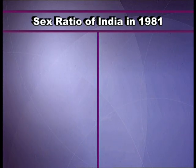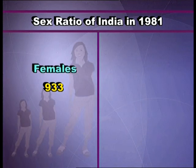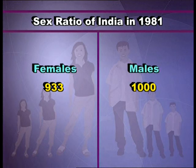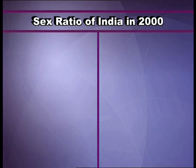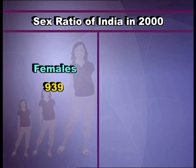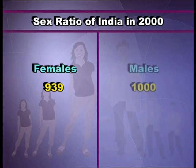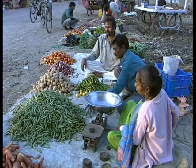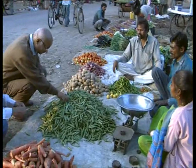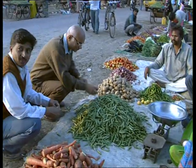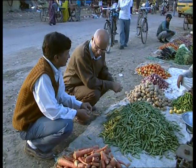According to the 1981 census, a marginal improvement took place and the sex ratio rose to 933. In the year 2000, the sex ratio was 939, which means for every 1,000 males there were 939 females.